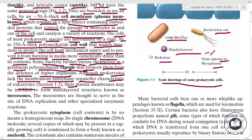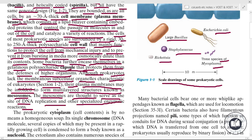Prokaryotes lack membranous subcellular organelles characteristic of eukaryotes. Their plasma membranes may be infolded to form multi-layered structures known as mesosomes. The mesosomes are thought to serve as the site of DNA replication and other specialized enzymatic reactions.